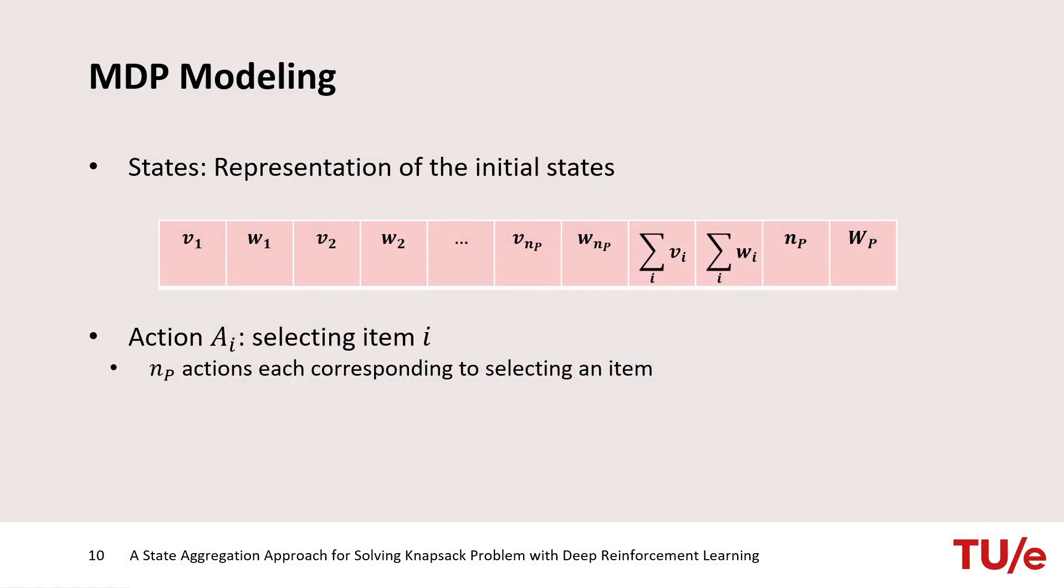As mentioned before, we use deep reinforcement learning to solve the problem and so we need to model the problem as a Markov decision process. A state in our modeling is a vector containing values and weights of items, the capacity and the number of items. And an action is selecting an item.